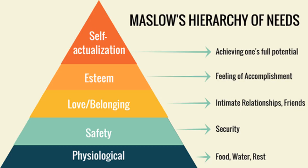Before we look at today's questions, I want to give you some information that will support you when you are answering the questions. I want to introduce you to Maslow's hierarchy of needs. You will see it's a triangle, and within the triangle there are five different needs — it's a five-stage model. We work from the bottom up to the top. Maslow is a theory, and you can do some more research if you are interested, because there's a lot of information out there.